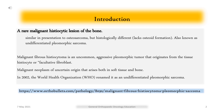Malignant fibrous histiocytoma is an uncommon, aggressive pleomorphic tumor that originates from the tissue histiocyte or facultative fibroblast. It is a malignant neoplasm of uncertain origin that arises both in soft tissue and bone. In 2002, the World Health Organization (WHO) renamed it as undifferentiated pleomorphic sarcoma.